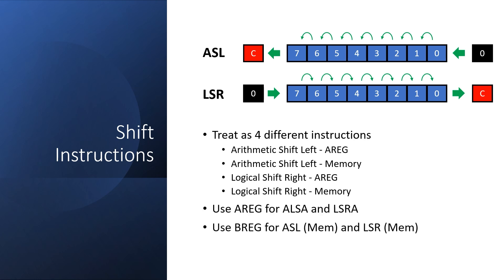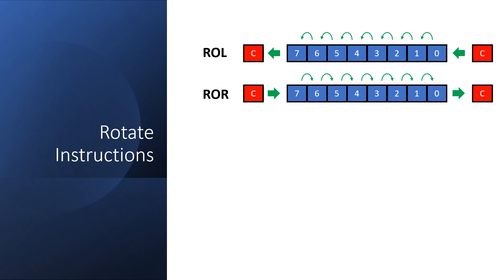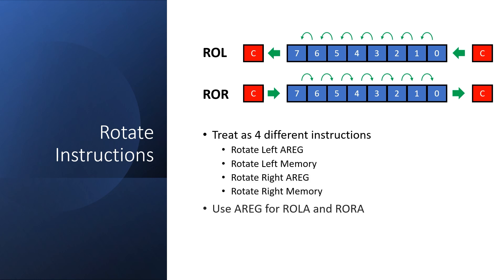For those involving the memory location, what I'm actually going to do is read the value into the B register, operate on it, then write it back to memory. Rotates are very similar, with the exception that the backfill comes from the carry itself — and obviously the carry going in can be different than the carry coming out. Again, instead of counting this as two instructions, I actually implement it as four different instructions.